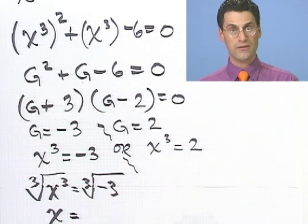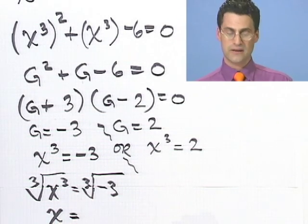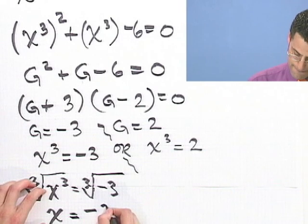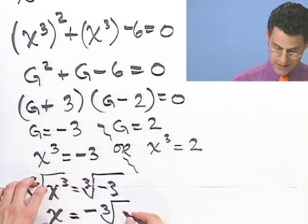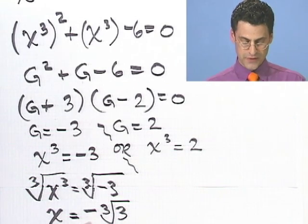You can take odd roots of any negative things. The negative sign pops out, right? Because negative 1 times negative 1 times negative 1 is negative 1. So I have minus the cube root of 3.